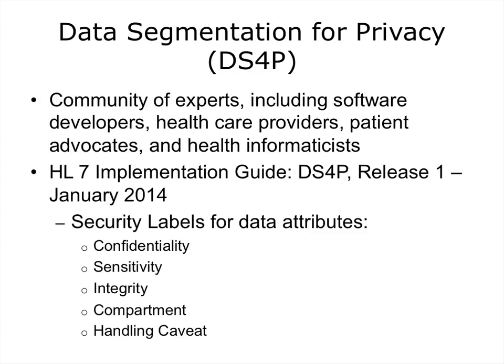Data segmentation for privacy, or DS4P, is a community of experts including software developers, healthcare providers, patient advocates, and health informaticists working on an implementation guide for HL7 around data segmentation. They are specifically looking at security labels for data attributes. The first four security label fields are assessments based only upon the content of the resource, such as the clinical facts to which the security label is assigned. The Handling Caveat security label field may also convey privacy marks that are to be rendered when the labeled information is accessed. There are people actively working on coming up with a method to label the data so everyone knows what types of privacy controls need to be applied.